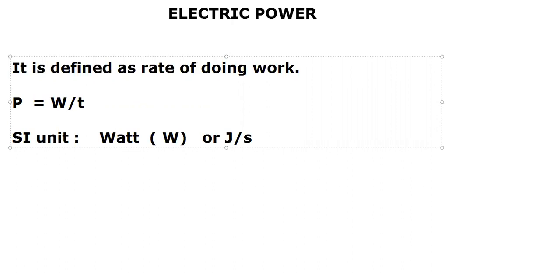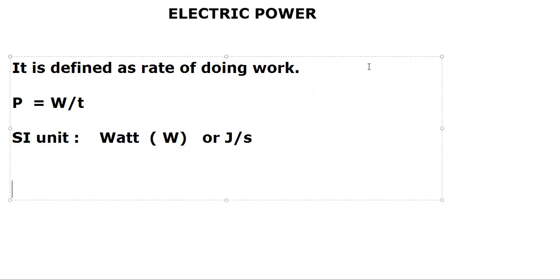You must have heard this word many times — when you go to buy any electrical appliance like a bulb or tube, there is a power rating given to it: 100-watt bulb, 100-watt tube, 60-watt bulb. So that is the word you hear in your day-to-day life as well.